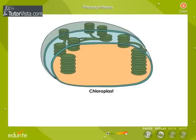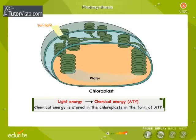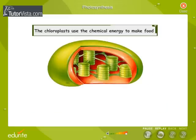In the chloroplast, a process that uses water changes the light energy into a kind of chemical energy called ATP. This chemical energy is stored in the chloroplast. The chloroplast uses the chemical energy to make food.